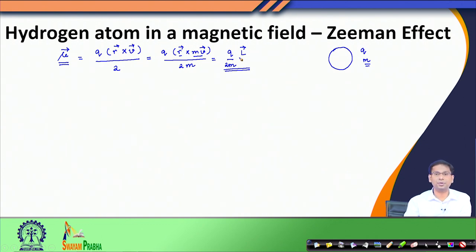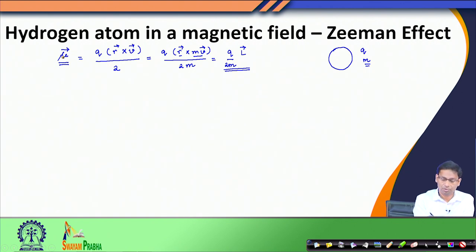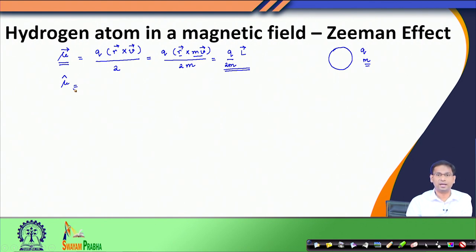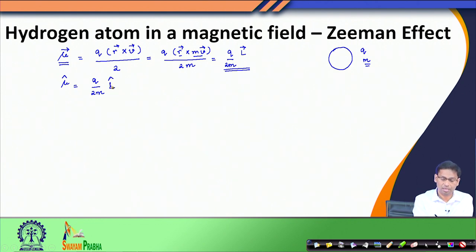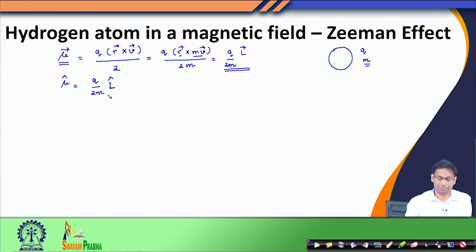This is what we know from classical mechanics. If we now formulate this in a quantum mechanical sense, the operator corresponding to this dipole moment can be written using postulate number 2 of quantum mechanics, which states that for every classical observable we can write a quantum mechanical operator. The quantum mechanical operator for this system is simply the L operator — the orbital angular momentum operator — which corresponds to the classical orbital angular momentum vector. Remember, this is a vector operator and we have already discussed quite a few things about this angular momentum operator.